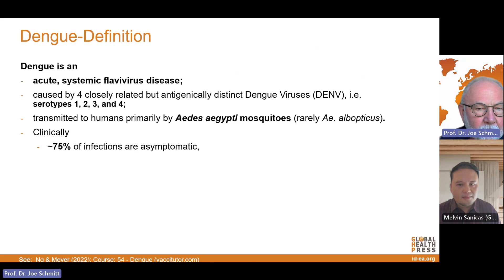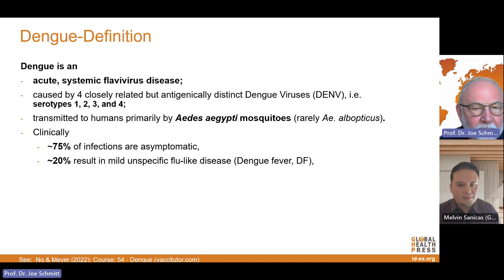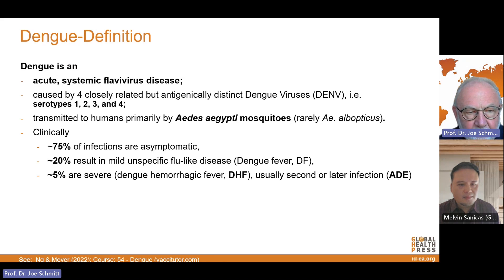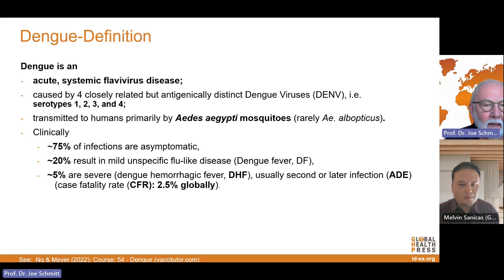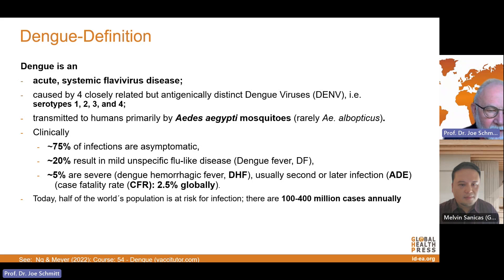Clinically, 75% of infections are asymptomatic, 20% result in a mild, unspecific flu-like disease called dengue fever, but 5% of infections result in very severe dengue hemorrhagic fever. We explain the difference between the two and why dengue hemorrhagic fever happens in a second podcast later on. The case fatality rate with severe disease globally is 2.5%, though it may be much higher or lower in some areas.